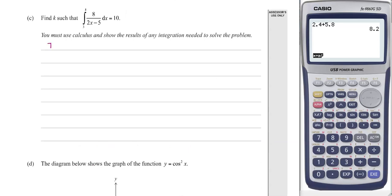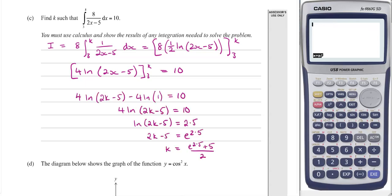On part c we've got our integral. We can take out the 8 and integrate like this. It makes it easier to see what we're doing. That would become 8 times ln of 2x minus 5. That 2 would come out and become a half. If we tidy that up and work it through knowing it has to equal 10, we can get down to our final solution of what k must be.